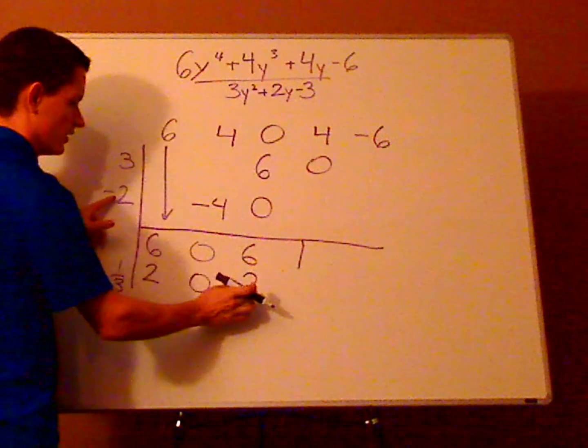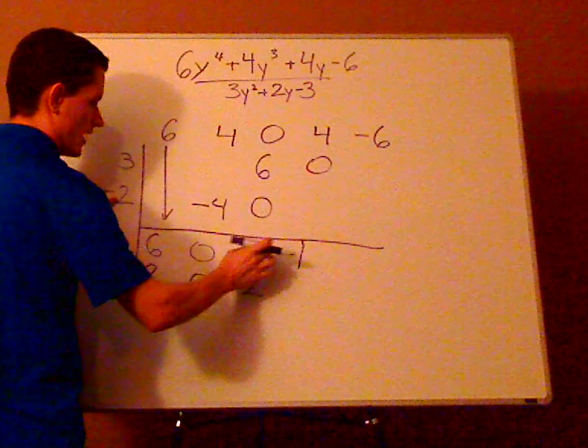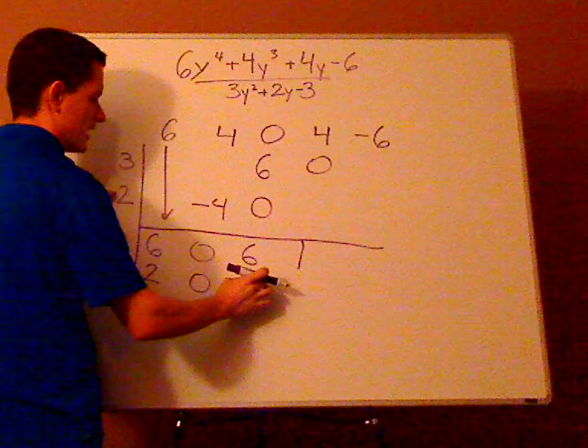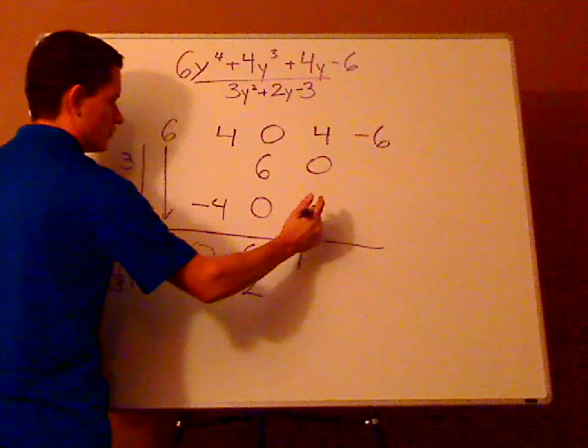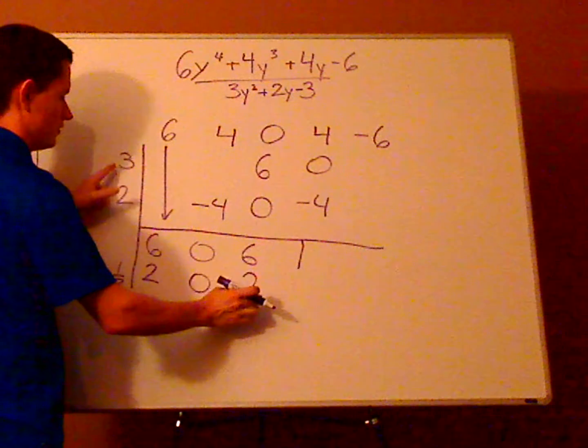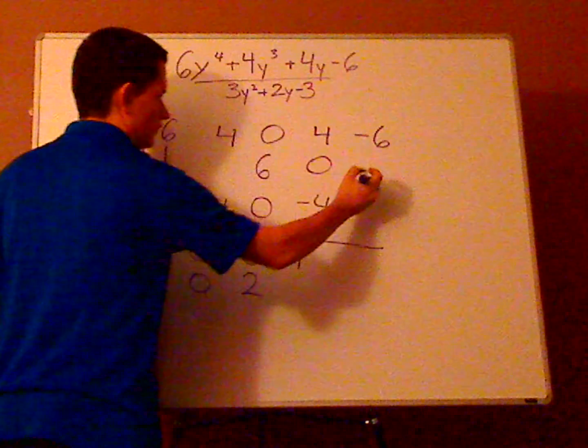Times 1/3 is 2. Then do the same thing that you did before, diagonal from here. So this would be 2 times negative 2 which would be negative 4, and then 2 times 3 which would be 6.